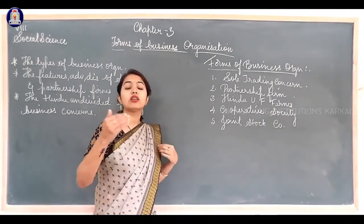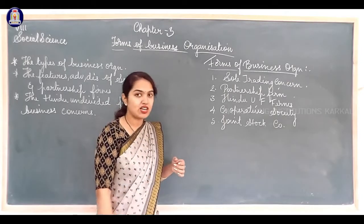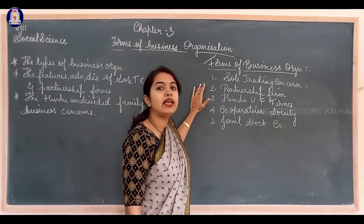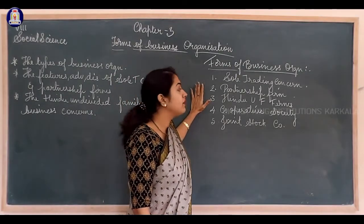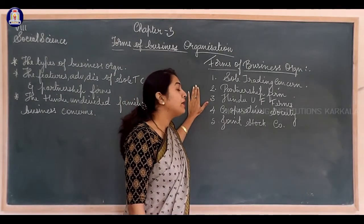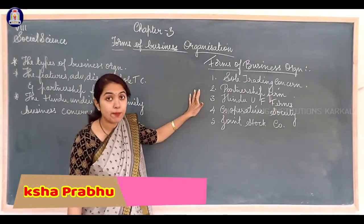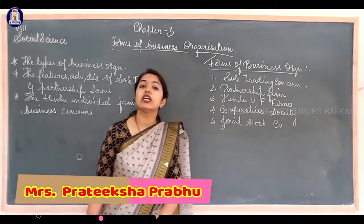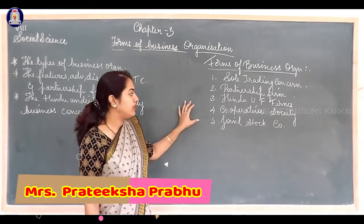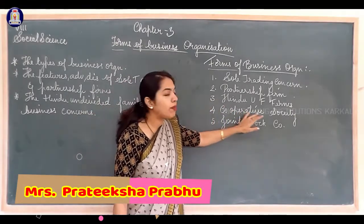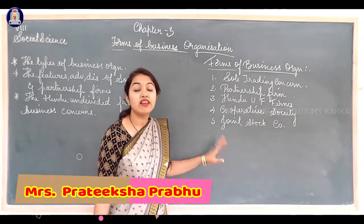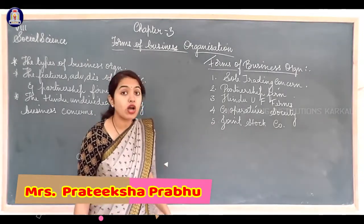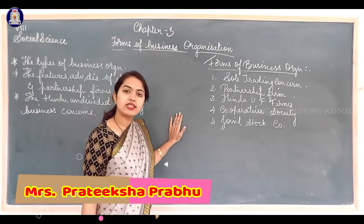The various types under forms of business organization are: firstly, sole trading concern; second, partnership firm; third, Hindu Undivided Family firms; fourth, cooperative society; and fifth, joint stock company.